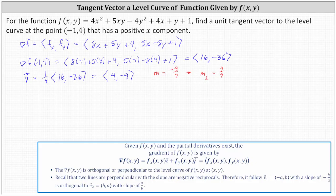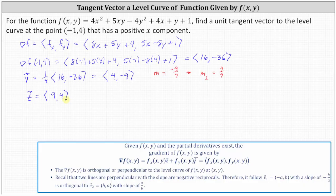Let's call the tangent vector t. It must have a slope of 4 ninths, which means one possible vector would have a y component of 4 and an x component of 9, giving the vector 9 comma 4. So now we have a tangent vector to the level curve at the point negative one comma four, but we're looking for a unit tangent vector.